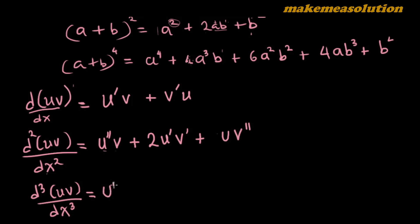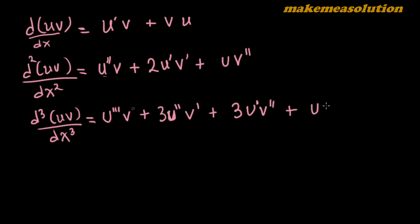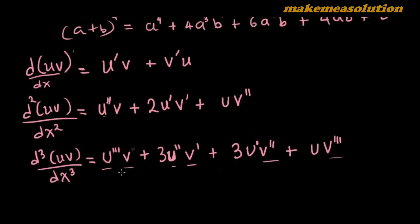For the third derivative d³(uv)/dx³, we get: u'''v + 3u''v' + 3u'v'' + uv'''. You can see that the order of differentiation of v is increasing in each term while that of u is decreasing, and the combinatorial coefficients from Pascal's triangle match the results exactly.